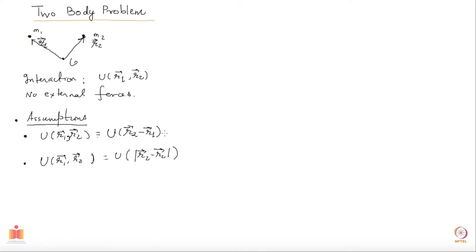This is clearly different from before — it still depended on the direction in which r2 minus r1 points. So here, with r2 and r1, this vector r2 minus r1, when written this way, means the potential energy cares about which direction this vector is pointing. So if you rotate this entire setup, then r2 minus r1 will be pointing in some other direction and it may depend on that.